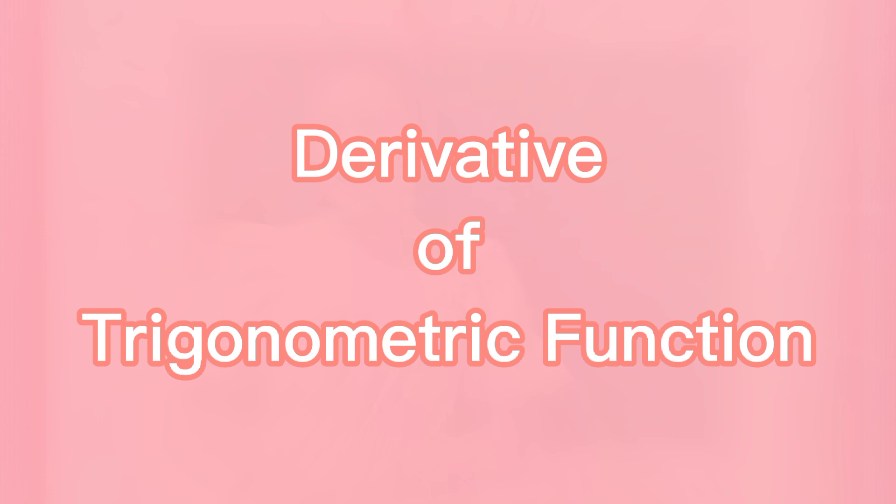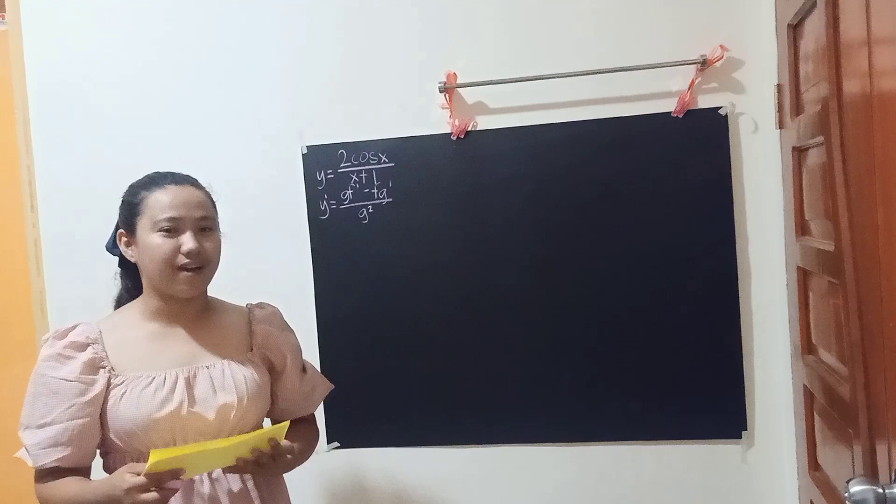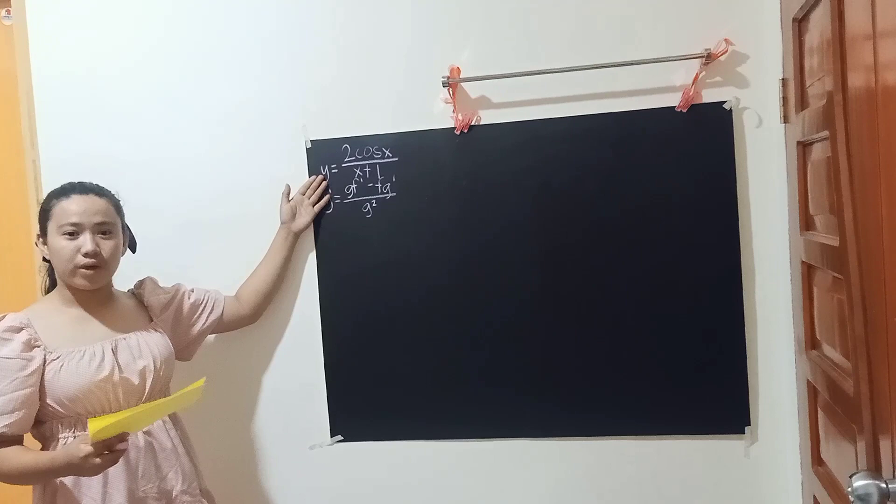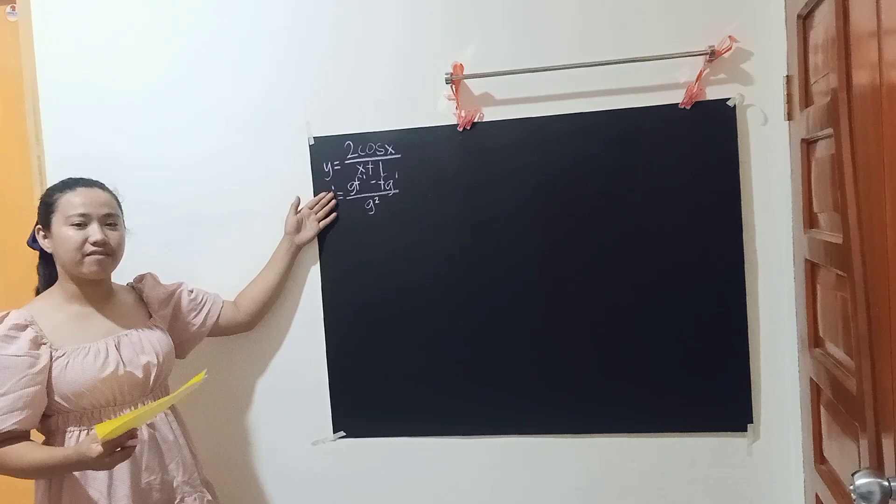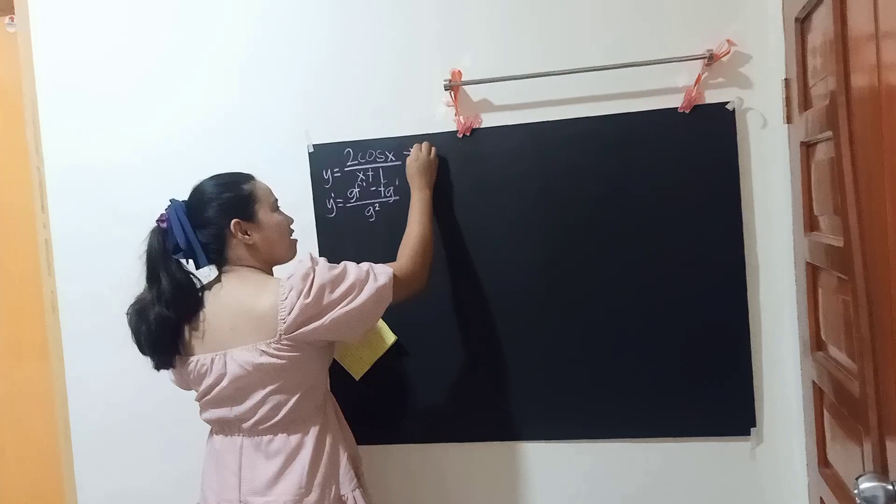How can we differentiate this function? As we can see, we have a fraction. So we can use the quotient rule. This is the formula for solving a derivative of a quotient. Let's say this is F and this is G.